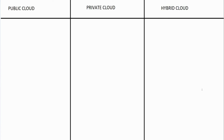Let's talk about the concepts of what a public cloud is versus a private cloud and a hybrid cloud, and get into the details as to what the differences are. The first thing to understand about a public cloud is that it is open to the public — it's available to anyone, and anybody who wants to sign up for it can utilize it.